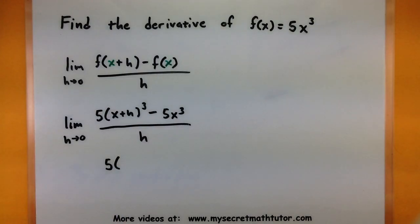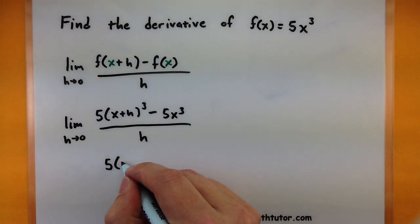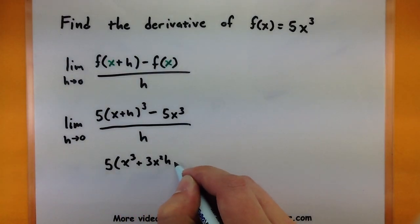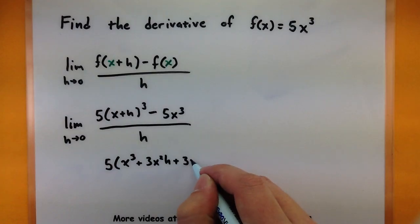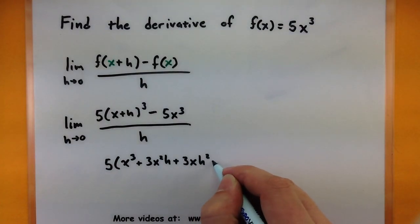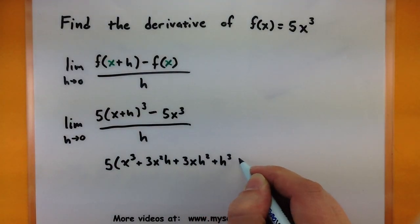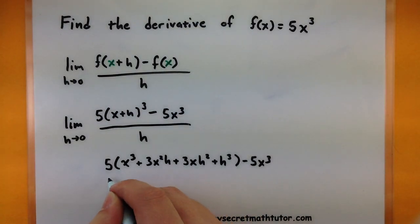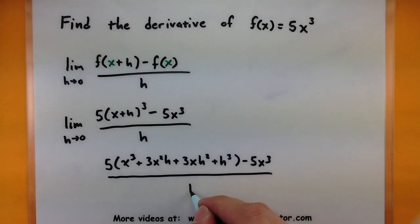I've already done this ahead of time so we can save ourselves a little bit of work. So x cubed plus 3x squared h plus 3x h squared plus h cubed minus 5x cubed all over h. And of course we are still figuring out what that limit is.